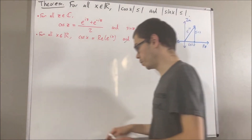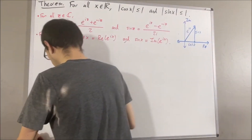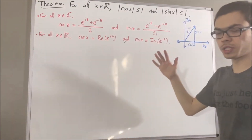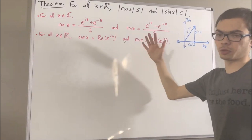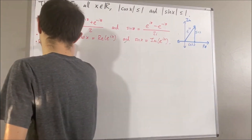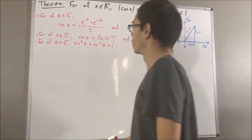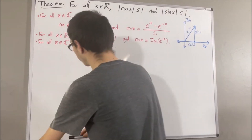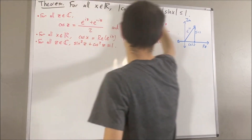And another fact that we've proven about sine and cosine is that sine squared z plus cosine squared z is equal to 1. So now let's get into proving this theorem.